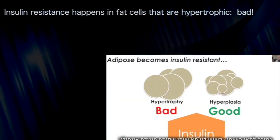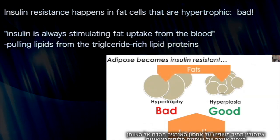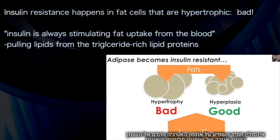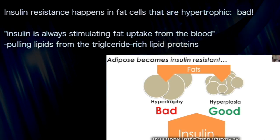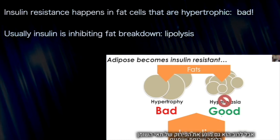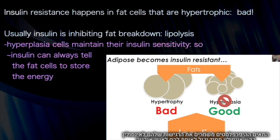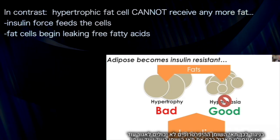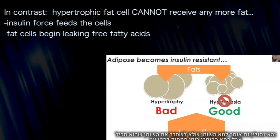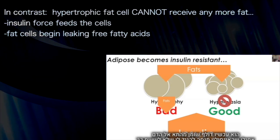When a fat cell becomes insulin resistant on the hypertrophic side, insulin is always stimulating the uptake of fats from the blood — specifically activating lipoprotein lipase and pulling lipids off triglyceride-rich lipoproteins. Normally, insulin is also inhibiting lipolysis. In hyperplastic fat cells, they maintain their insulin sensitivity, so insulin can always tell the fat cells to store energy. The hypertrophic fat cell cannot store anymore. Insulin is force-feeding the fat cell more and more fat, yet the hypertrophic fat cell doesn't listen — it is now leaking free fatty acids even though insulin is trying to tell it not to.